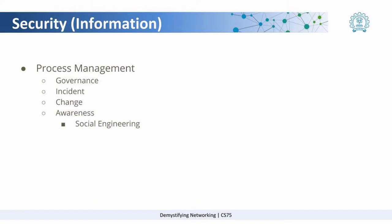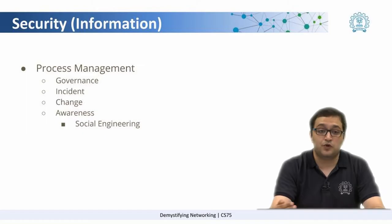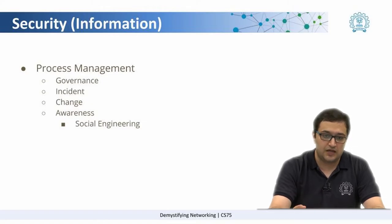The first part of process management is governance. In governance, what we mean is we need to have certain rules or processes in place so that all of the above can be done. For example, if you look at defense in depth, we need to have a rule in place which says that you need to secure your network, the host, the application, and your data.